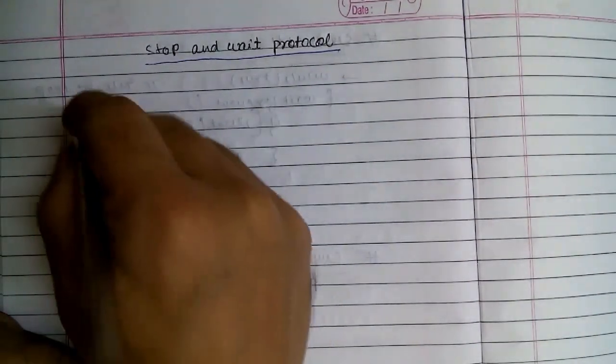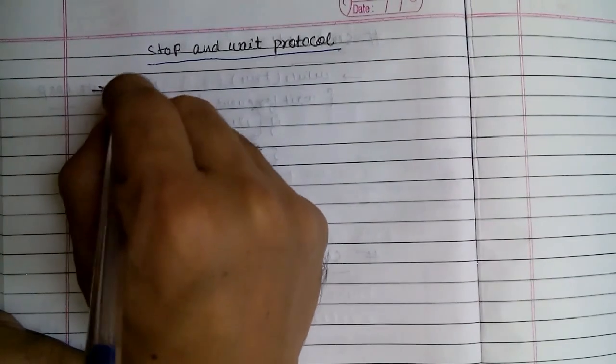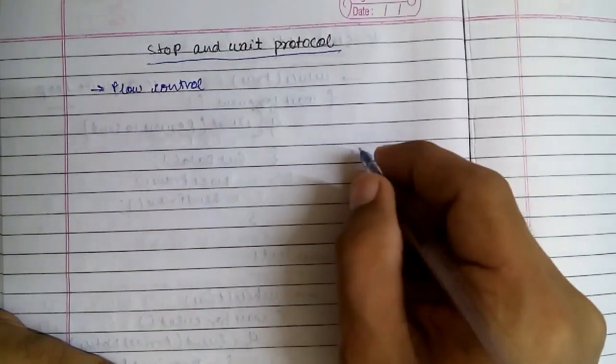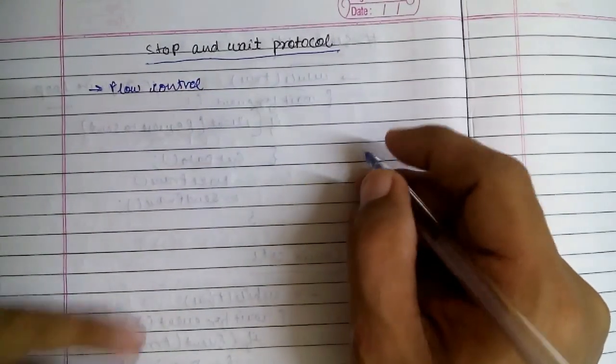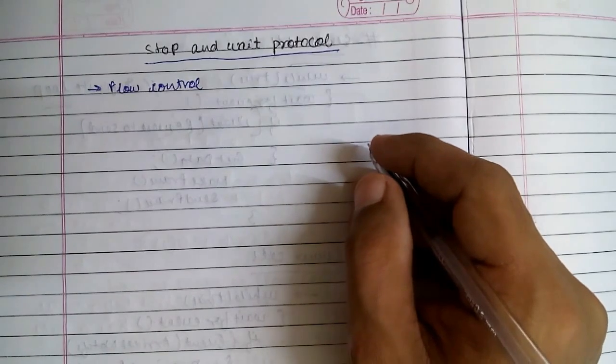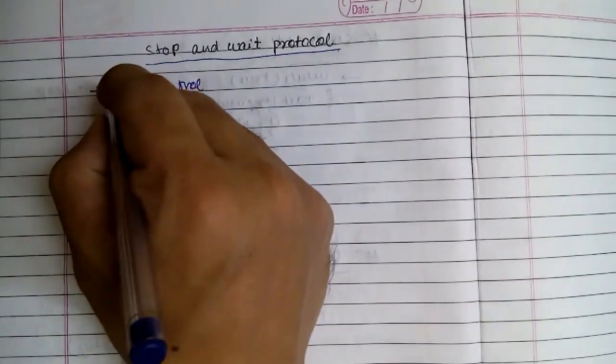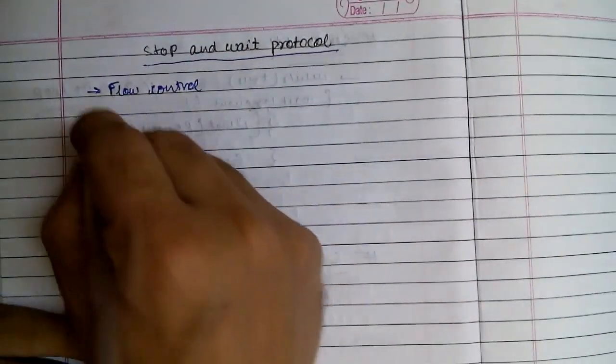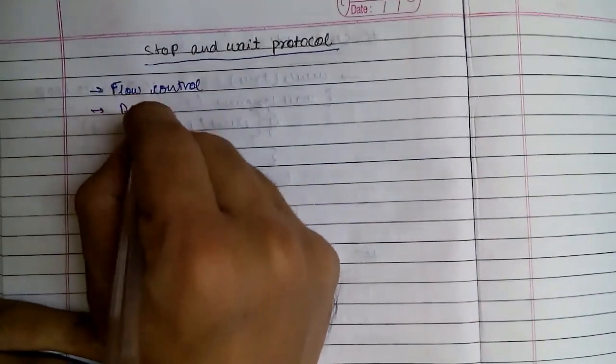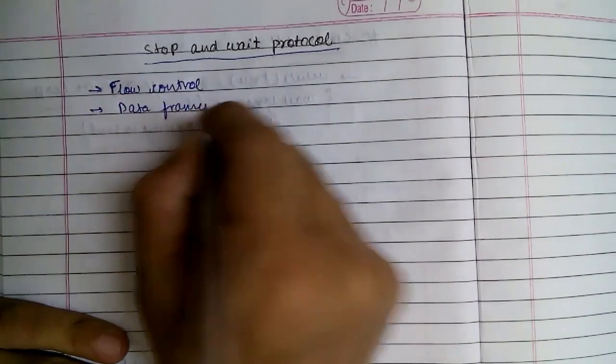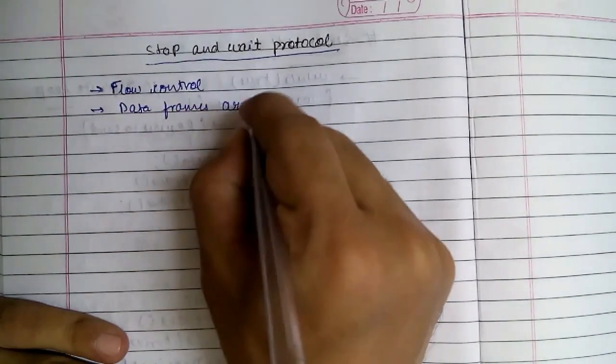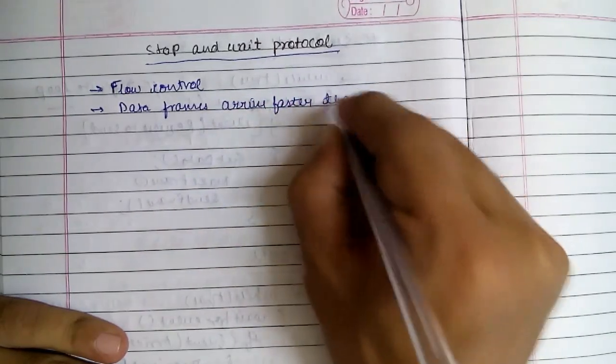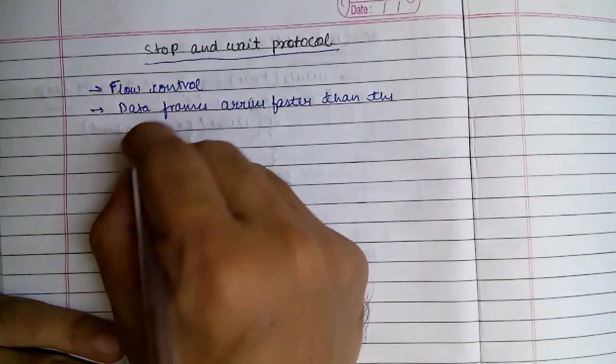So what happens, we are going to implement flow control in this. So what is flow control? As you know, to control the flow of data because usually what happens, data frames arrive faster than the receiver can handle.